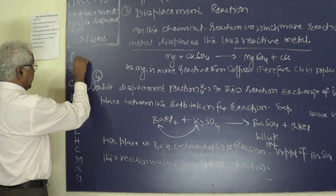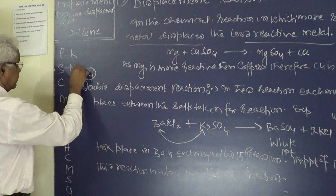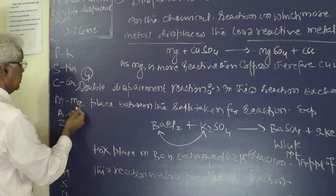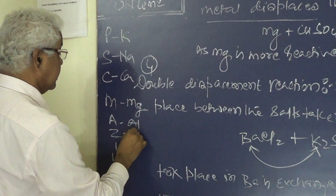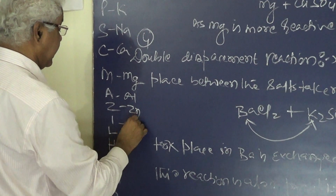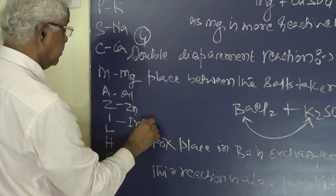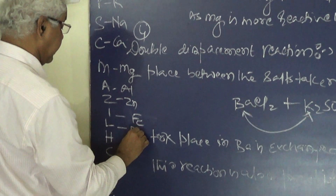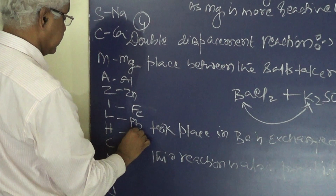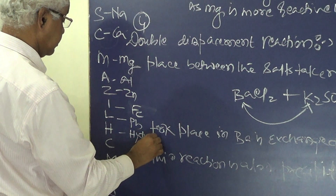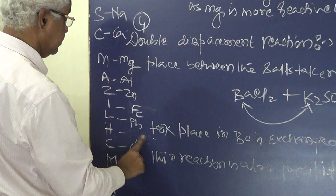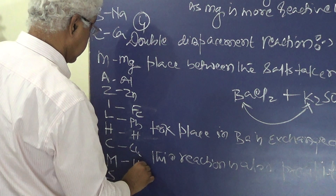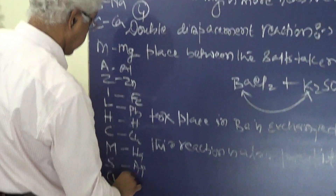Now, the reactivity series is: Potassium, Sodium, Calcium, Magnesium, Aluminium, Zinc, Iron (Fe), Lead (Pb), Hydrogen, Copper, Mercury (Hg), Silver, Gold.